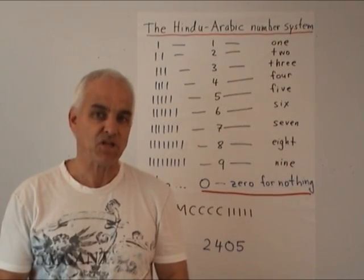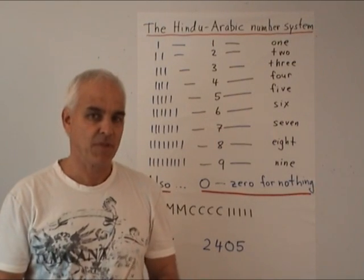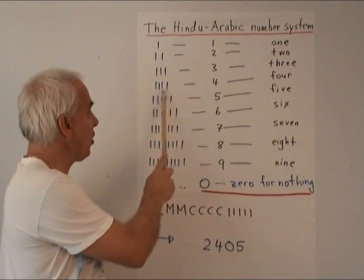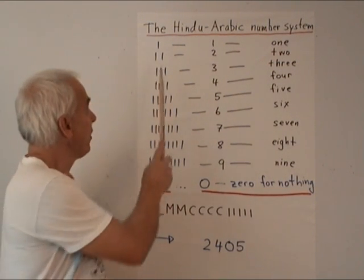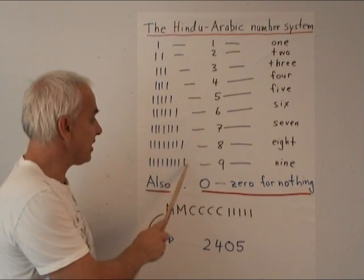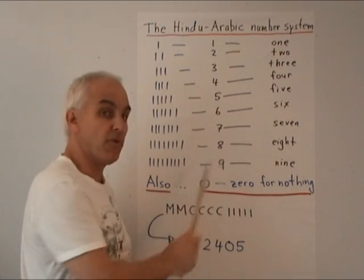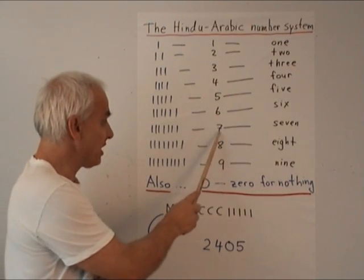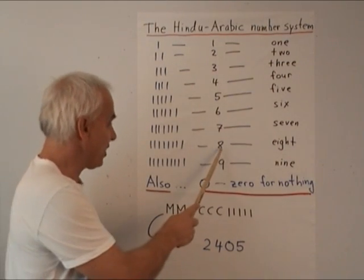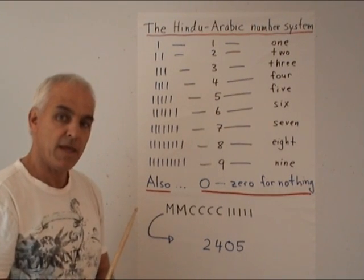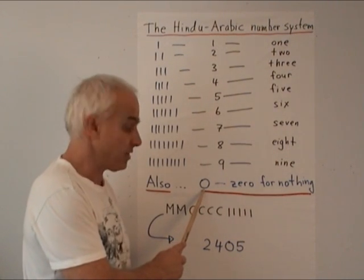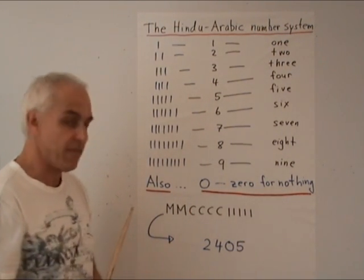The Indian mathematicians introduced a couple of key innovations. First, they had names and symbols for all of the numbers between one and nine — one, two, three, four, five, six, seven, eight, and nine. These symbols represent those strings of ones. In addition, they introduced a new symbol for nothing: zero, denoted by a circle, standing for nothing.